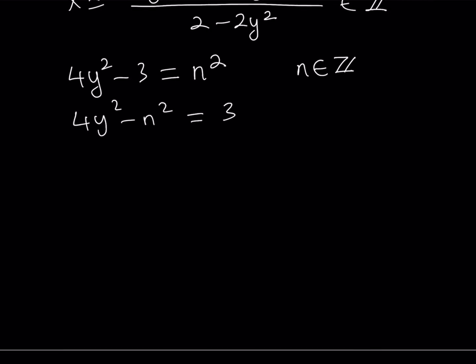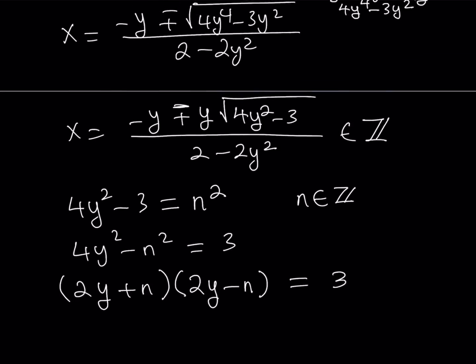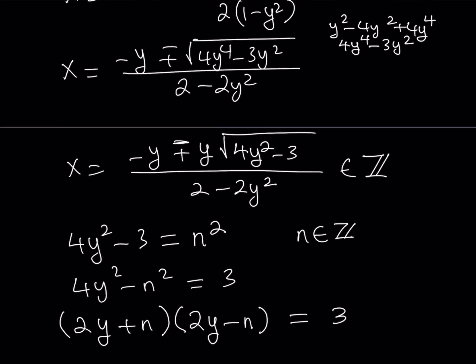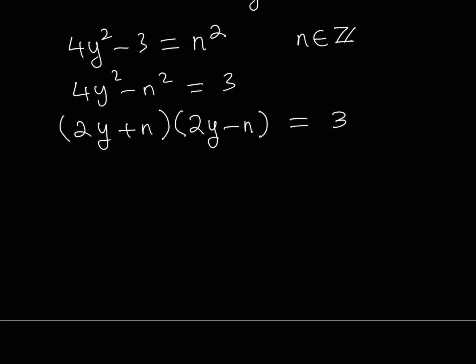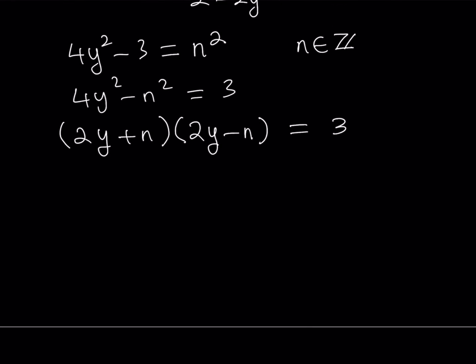Therefore, we're getting difference of two squares from here. We got 2y plus n times 2y minus n equals 3. Notice that we got an expression that looked complicated, but then we checked under the radical. The expression needs to be another integer. And now we did get an equation in the factored form, which is awesome. Since we want them to be integers, we're going to be checking different cases.